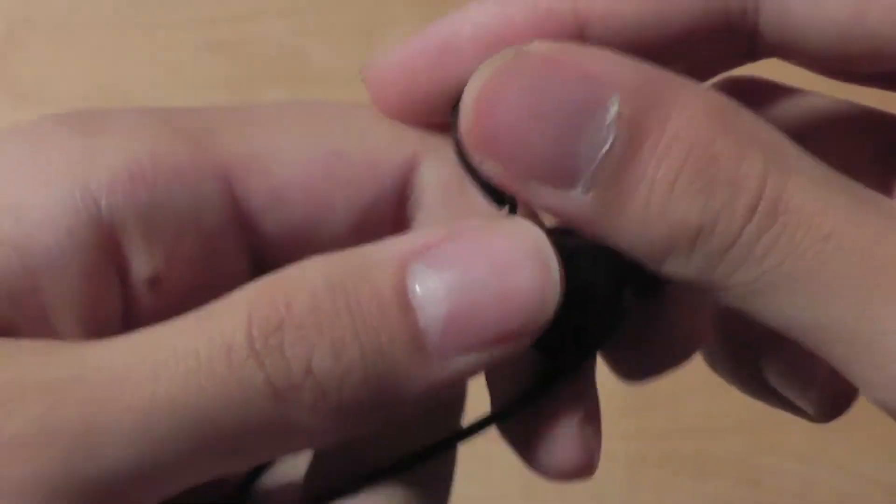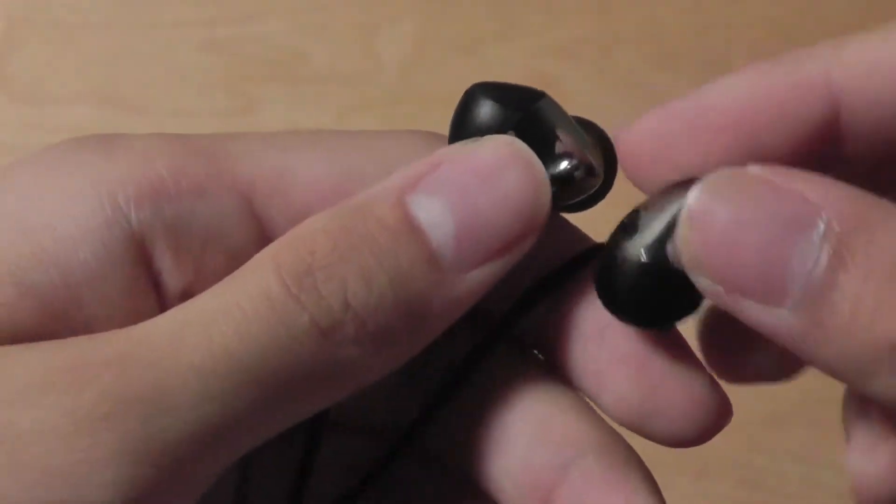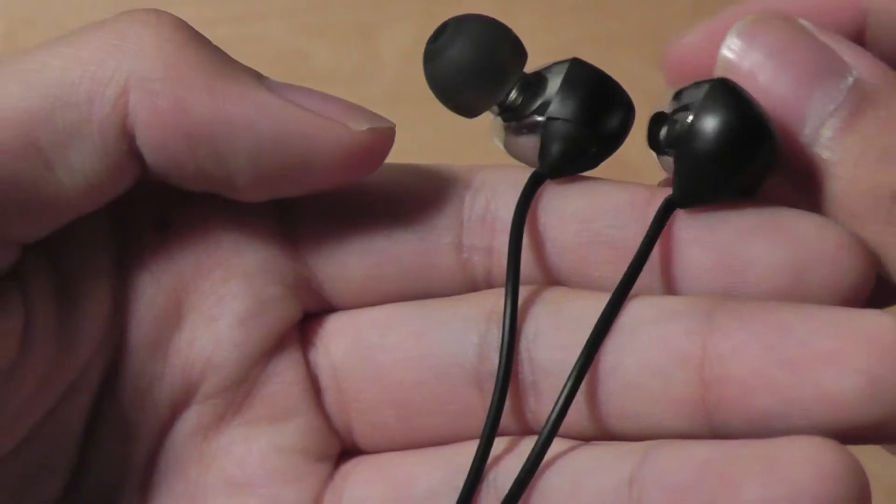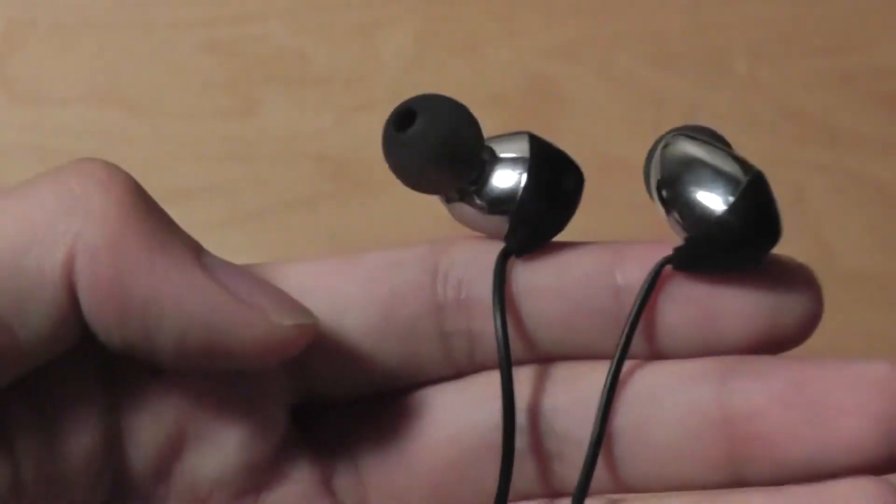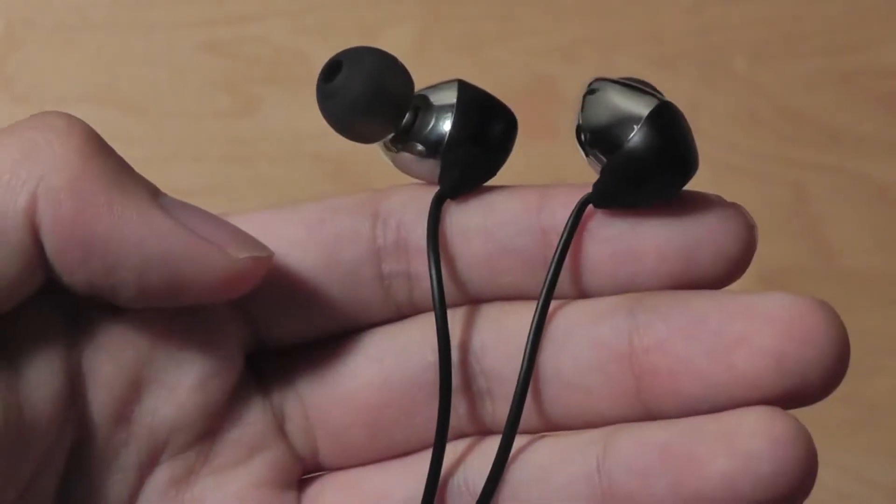So at the end of the day, we have to say that these Aukey earbuds are designed for your Samsung Galaxy phone, but they will work with any other Android, iOS smartphone, or Windows phone even. The EP-C15 actually does have a very striking design, look, and feel to them. They're ultra lightweight and unlike anything we've really seen before on the market, so if you are looking for a lot of style and also pretty decent performance, you can definitely check these out.